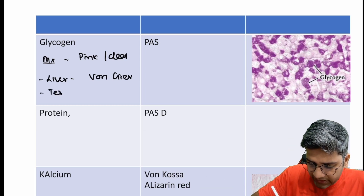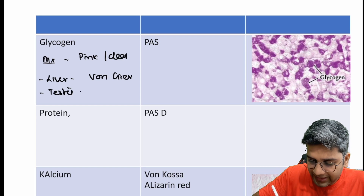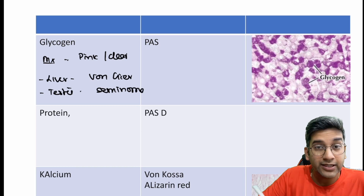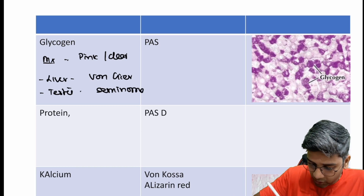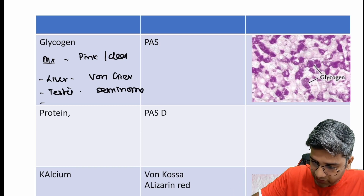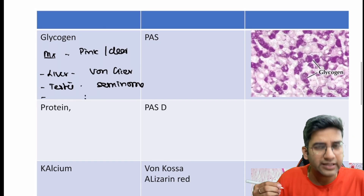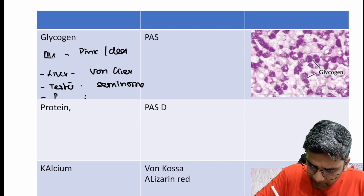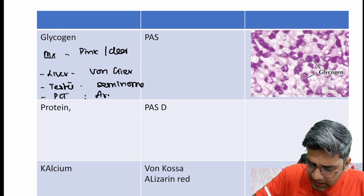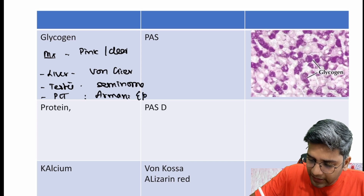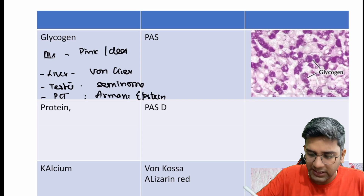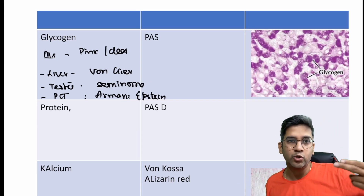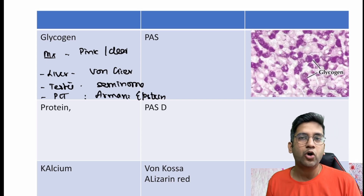Glycogen can also be seen in tumors — in the testis, seminoma cells, and in the ovary, dysgerminoma cells have glycogen. That's a classical finding. Additionally, in diabetes, you can see glycogen in the proximal convoluted tubule (PCT), causing the Armani-Epstein lesion. So, all these are sites of glycogen accumulation: Armani-Epstein lesion in diabetes, testis seminoma, and liver or glycogen storage disorders.